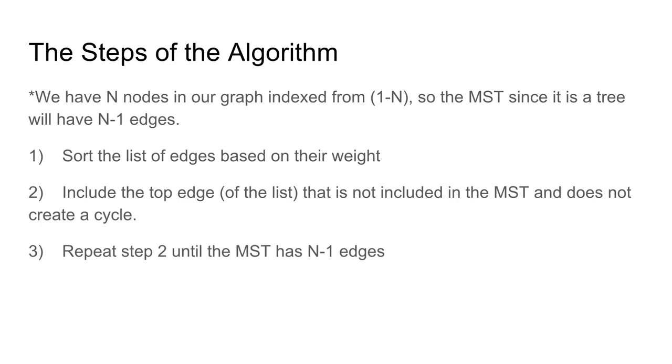Let's go ahead and see the steps of the algorithm. We're gonna assume that we have N nodes. The nodes are gonna be indexed from 1 to N, and the MST is gonna have N minus 1 edges, and that's because MST is a tree. So trees have, if you have N nodes in your tree, you're gonna have N minus 1 edges in the tree.